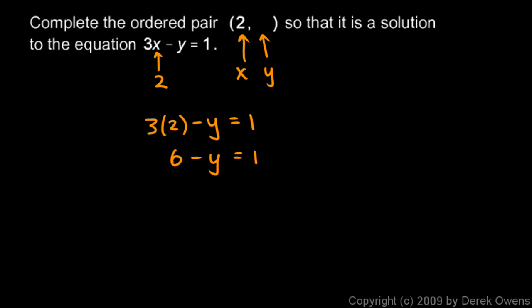And you can see at that point that y has to equal 5 because 6 minus 5 equals 1. So y equals 5 so I can complete the ordered pair. The ordered pair would be 2 comma 5.